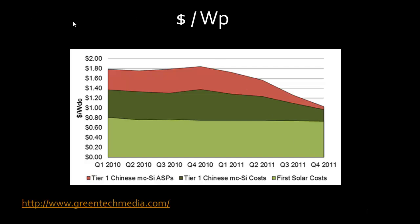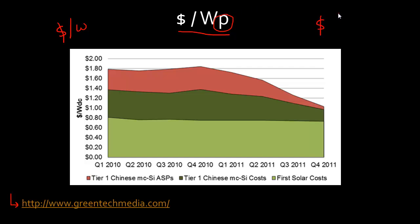If you look at any newspaper article today reporting on solar energy, you'll often read the term dollar per watt. Or if it's a good technical publication which knows a little bit about solar, you'll see this term quoted as dollar per peak watt, where P stands for peak. Or often times you'll also see this other term, which is dollar per watt DC.